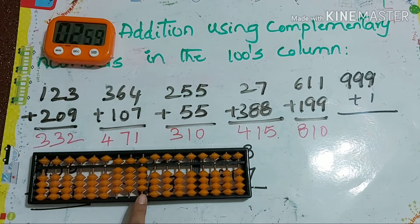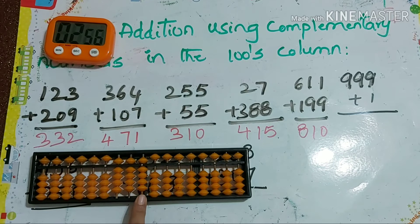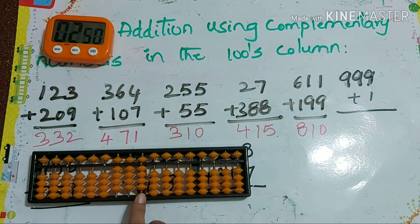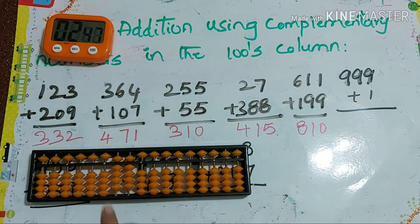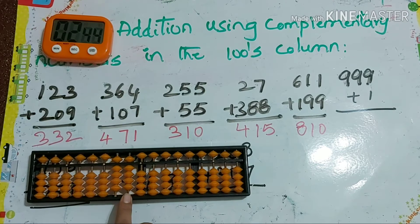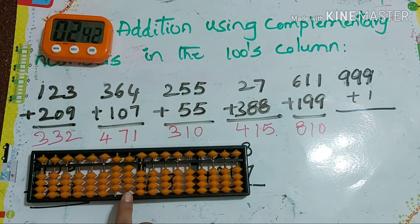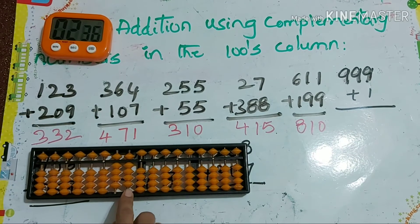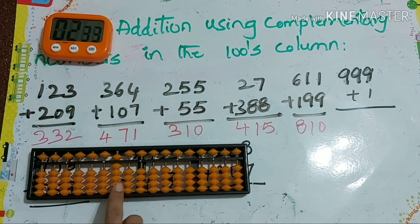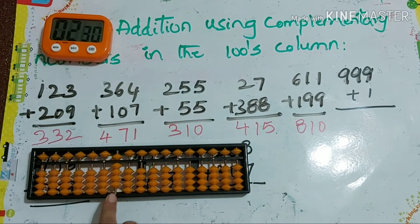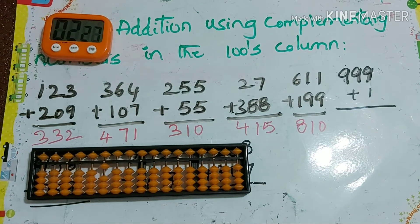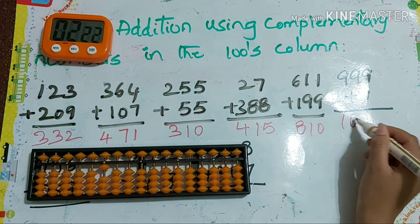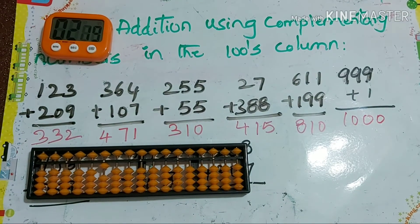Next: 999 plus 1. We can't add in the ones place, so we go to the tens place and remove 9 beads in the ones place. We also can't add in the tens place, so we go to the hundreds column and remove 9. We then move to the thousands column: plus 10 minus 9. The answer is 1000. It's a tricky problem — watch the earlier part of the video if you don't understand.